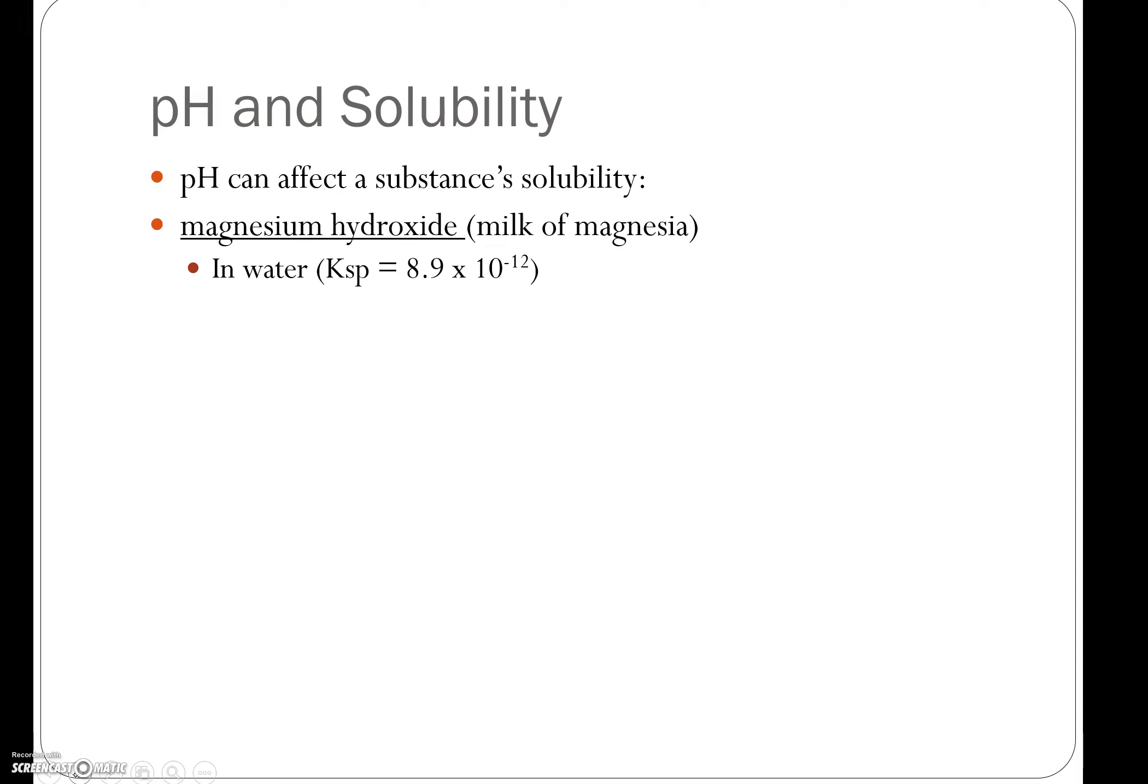Magnesium hydroxide dissolved in water has a Ksp value of 8.9 times 10 to the minus 12. That means it's not very soluble in water. And we can write the dissociation: magnesium hydroxide dissociates into magnesium ions and hydroxide ions.